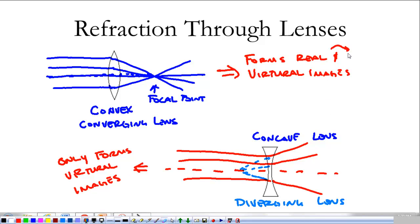Now, for us, real images are going to be inverted and we're going to look at that in a second. And virtual images are going to be upright. And you'll have an opportunity to play with these lenses in class. What's important for us to remember is that a convex lens is converging and a concave lens is diverging.